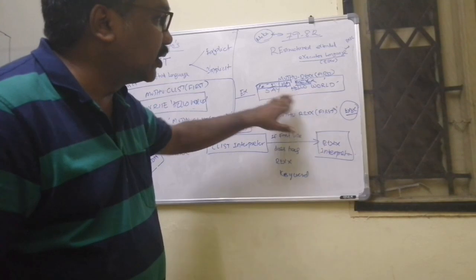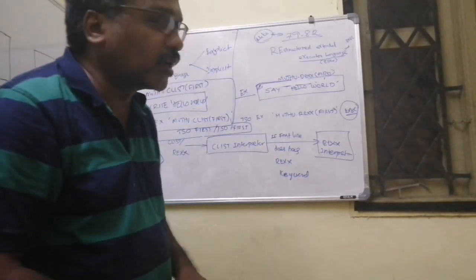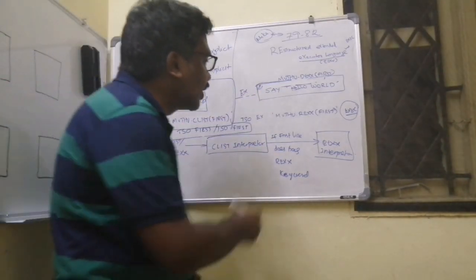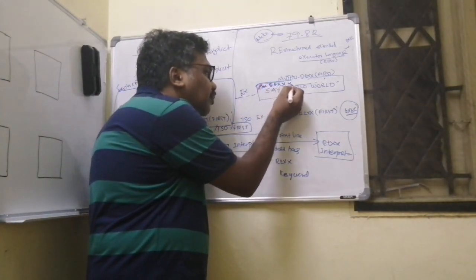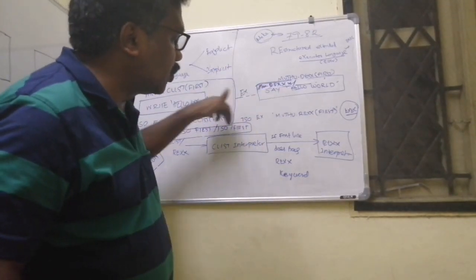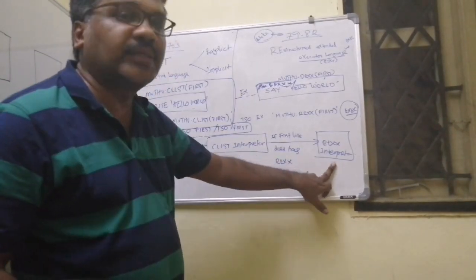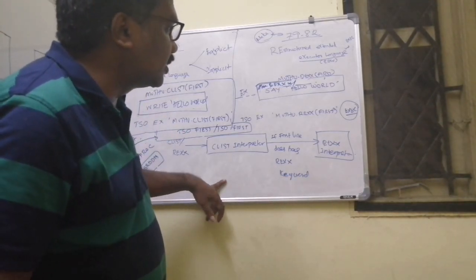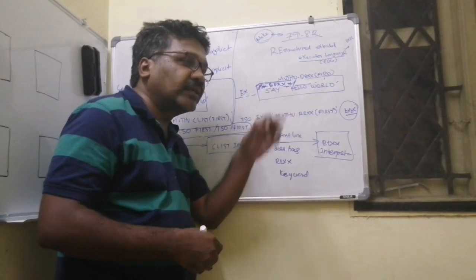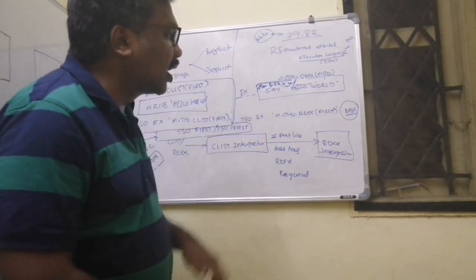Because of this CLIST-interpreter rerouting, if you use the EX line command on a REXX program without a REX keyword in the first line, it routes to the CLIST interpreter and fails. The practice became to include a comment like /* REXX */ in the first line. When the CLIST interpreter scans the first line and finds the REX keyword in a comment, it reroutes to the REXX interpreter. This is why even today, by convention, we include the REX keyword somewhere in the first line.